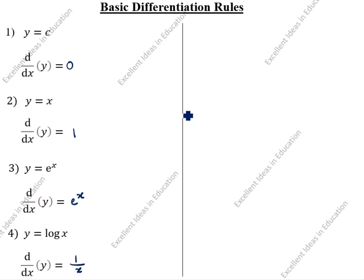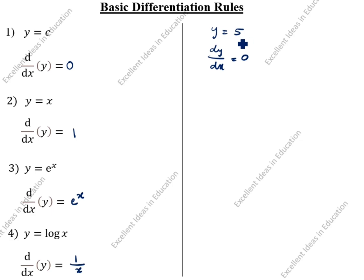We will see some examples of the first formula. y = 5. What is dy/dx? Differentiation is 0 — 5 is a constant term, so it comes 0. Next example: y = 2x. What is the differentiation? dy/dx equals e^x which is e^x.